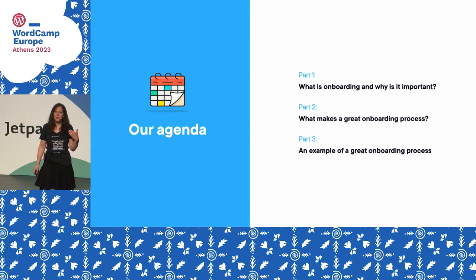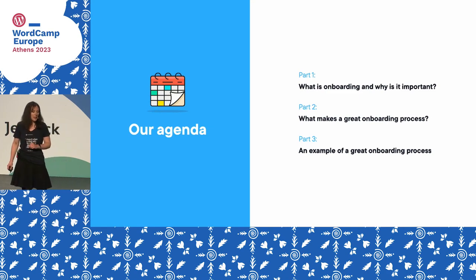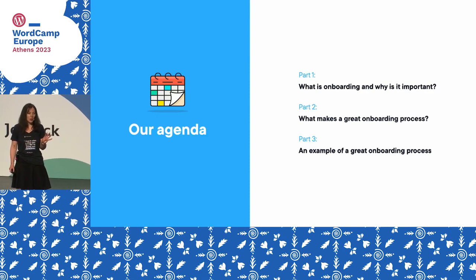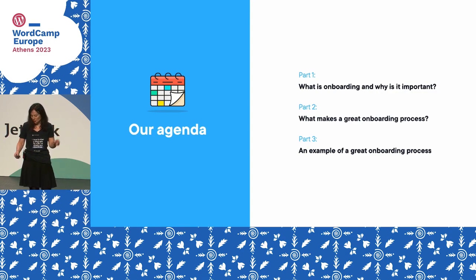The presentation has three parts. First, I'll briefly go through what onboarding is and why it's important to get everybody on the same page. Then I'll talk about the four things that make a really great onboarding process, and in part three — the meat of the presentation — I'll go through an example of a really good onboarding process that you can copy and use in your own projects.